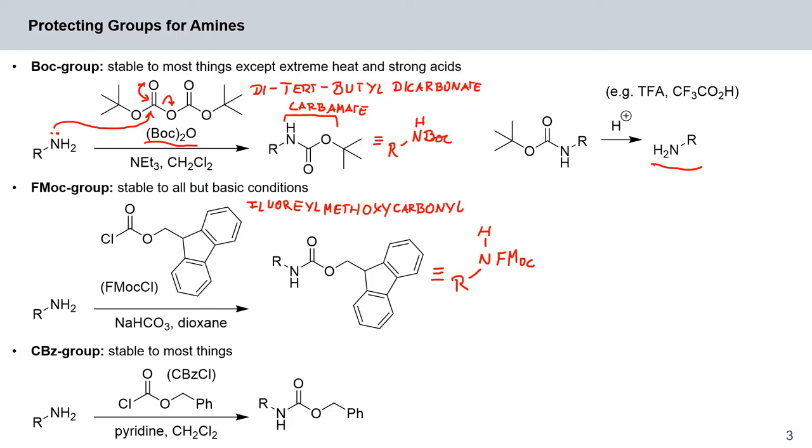Now this protecting group is stable to all but basic conditions. So essentially we subject this to base, for example piperidine in DMF, dimethylformamide, and we get our deprotected amine.